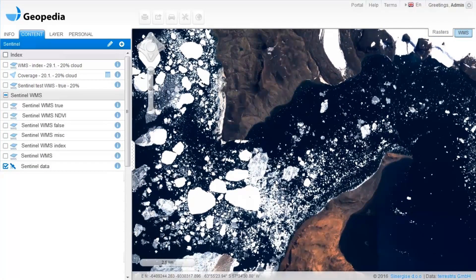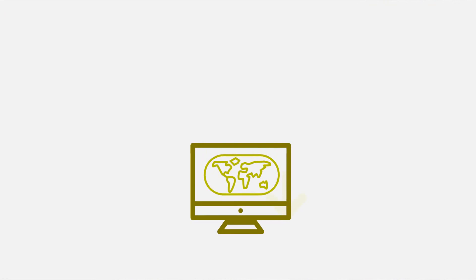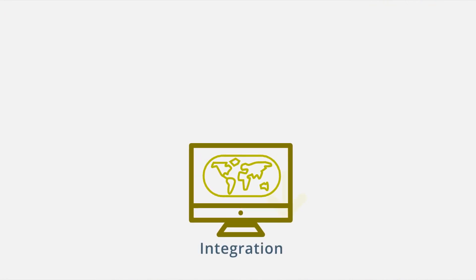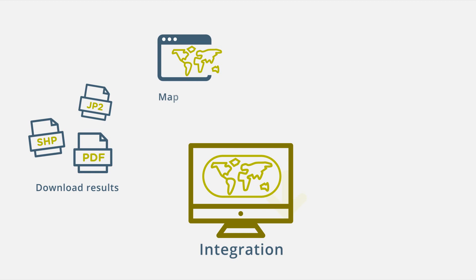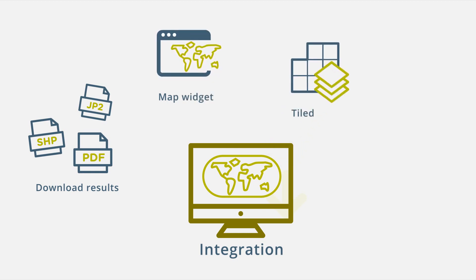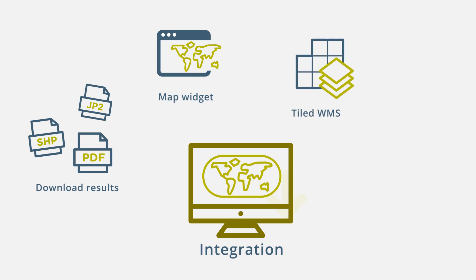SentinelHub provides several services which end users and domain experts are able to use to disseminate resulting Earth observation products. Download results as a PDF map, geo-referenced image, or vector data set. Map widget for integration in third-party websites. Tiled web map service for easy inclusion in open source frameworks such as OpenLayers. REST APIs for integration of advanced functionality such as time-lapse videos, statistical query results, change detection products, or others.